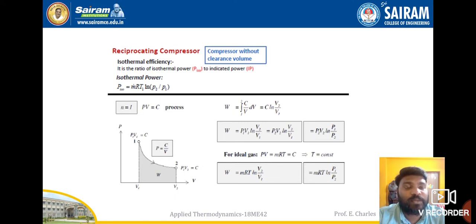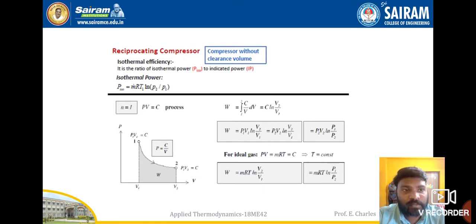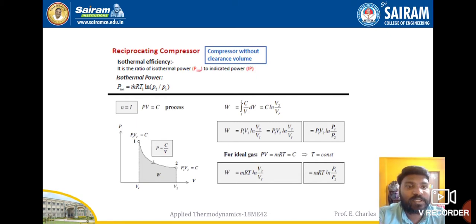If we want to write the work done in terms of pressures instead of volumes, we can write W = P₂V₂ × ln(P₁/P₂). Using the ideal gas equation PV = mRT = constant, we get W = mRT × ln(V₂/V₁) = mRT × ln(P₁/P₂). These are the results under the assumption that the polytropic index n = 1.